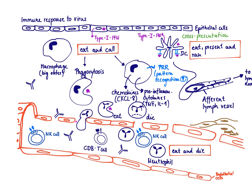But the dendritic cell has the capacity to present antigens via its MHC class 1 even if it is not infected. This principle is called cross-presentation. So the dendritic cell can initiate a CD8 T-cell response via presentation of viral antigen on MHC class 1, no matter if the dendritic cell is infected or not.